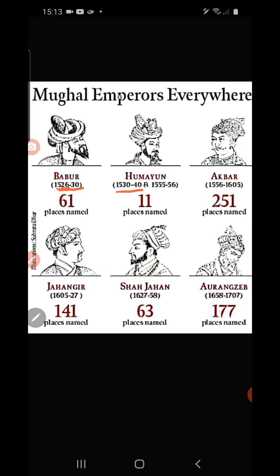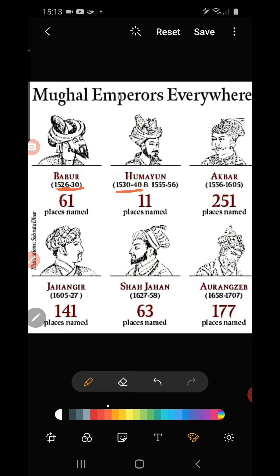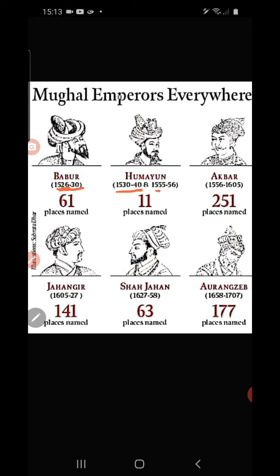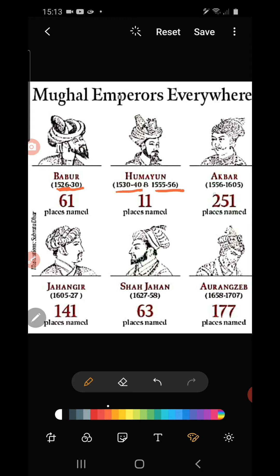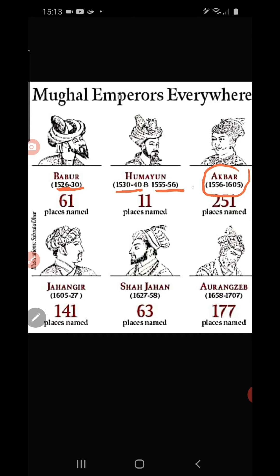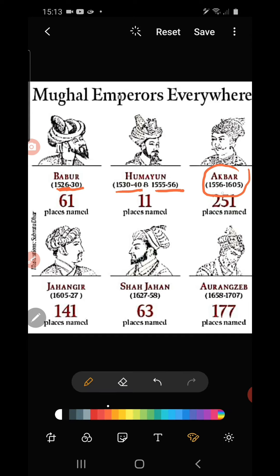After 1540, Sher Shah Suri defeated Humayun. After 15 years — following the death of Sher Shah Suri — Humayun recaptured power but ruled only one year before dying. His infant son Akbar then became ruler. Akbar is known as Akbar the Great, a very efficient ruler. He ruled India from 1556 to 1605.